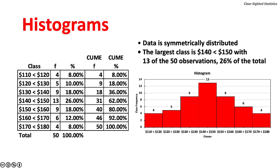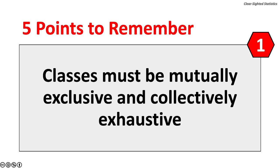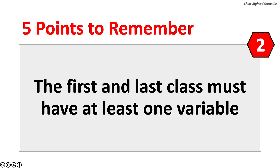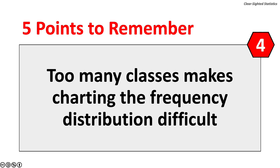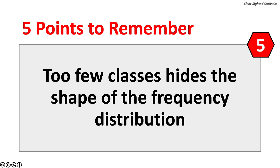There are five key points to remember when building a frequency distribution. One, classes must be mutually exclusive and collectively exhaustive. Two, the first and last class must have at least one variable. Three, all classes have the same width. Four, too many classes makes charting the frequency distribution difficult. Five, too few classes hides the shape of the frequency distribution.